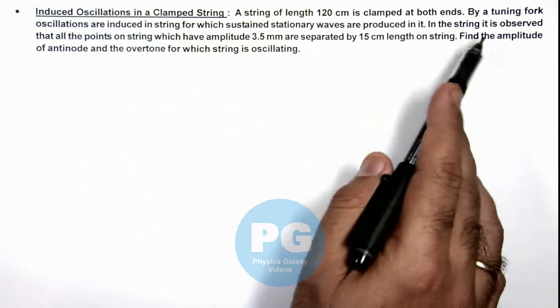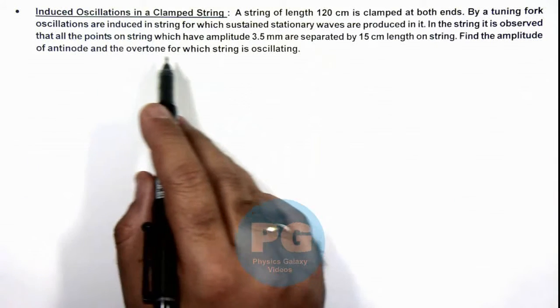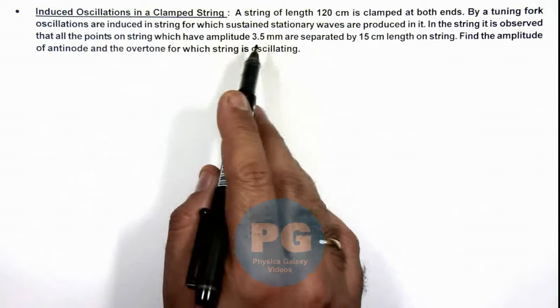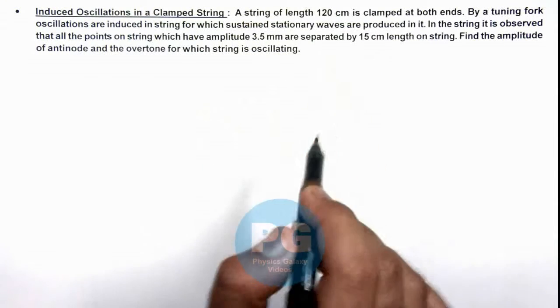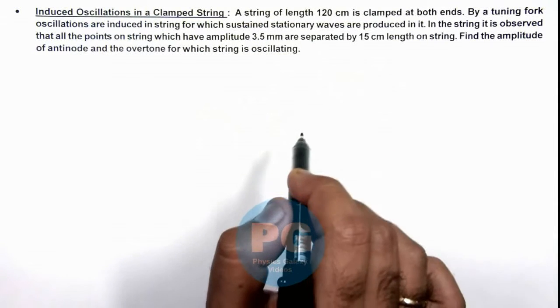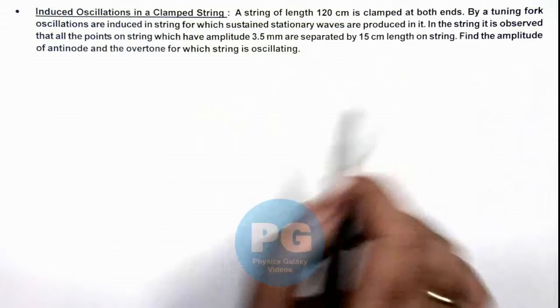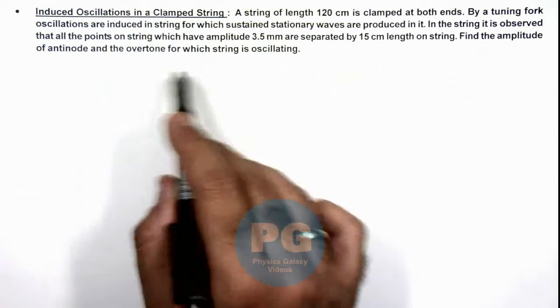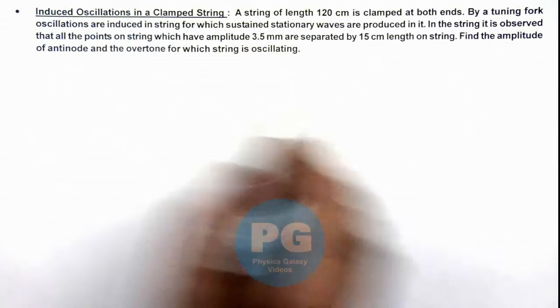In the string it is observed that all the points on the string which have amplitude 3.5 mm are separated by 15 centimeter length on the string. We are required to find the amplitude of antinode and the overtone for which the string is oscillating.